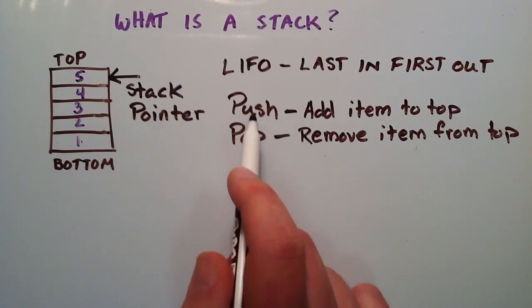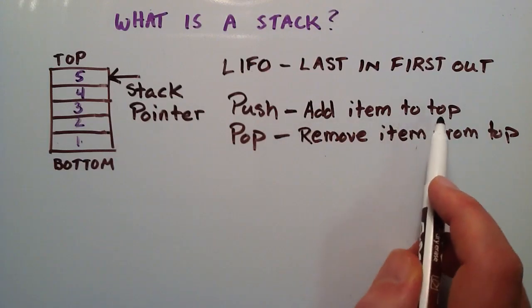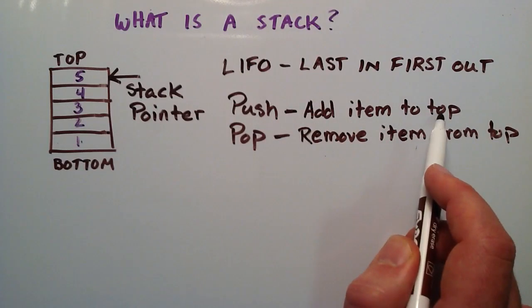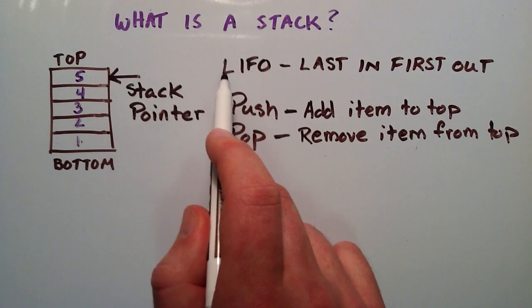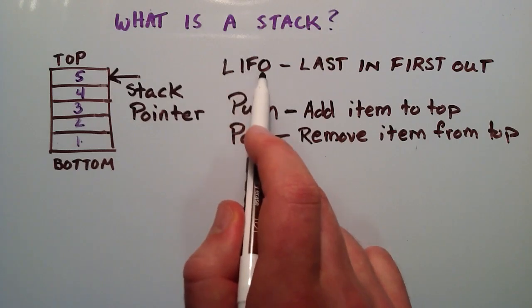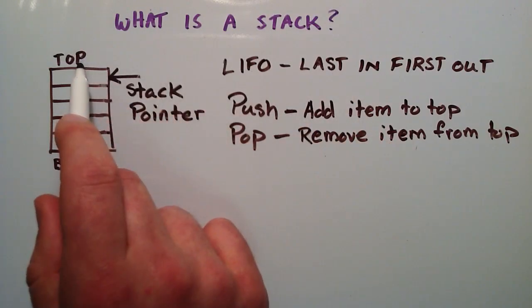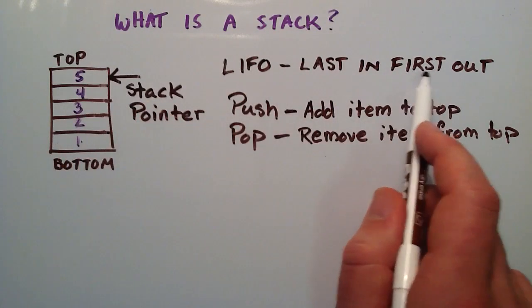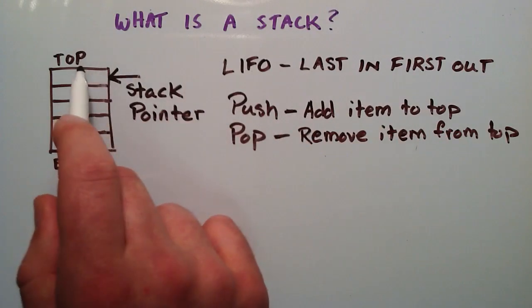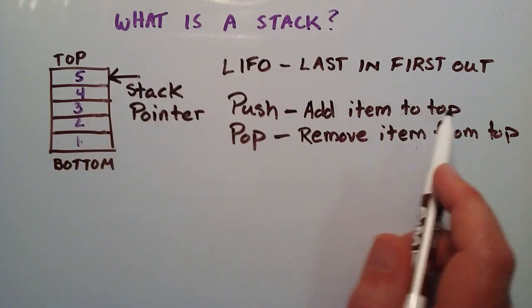Because of these two functions, and because they always have to manipulate the top of the stack, we call the stack a last in first out data structure. Because the last item that was placed on the top of the stack is always going to be the first item removed from the stack. Because they both manipulate the top.